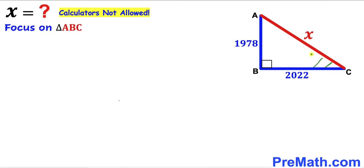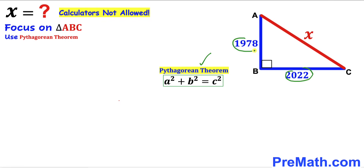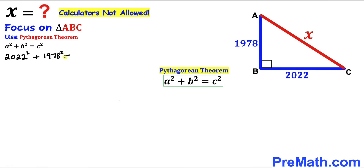Let's focus on this right triangle ABC and apply the Pythagorean theorem. The theorem states A squared plus B squared equals C squared. In our case, the two legs are 2022 and 1978, whereas the hypotenuse is X. So we can write 2022 squared plus 1978 squared equals X squared.